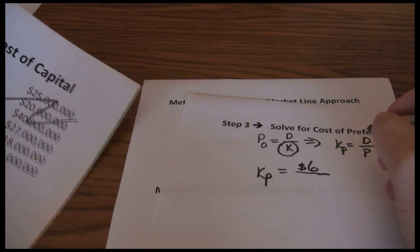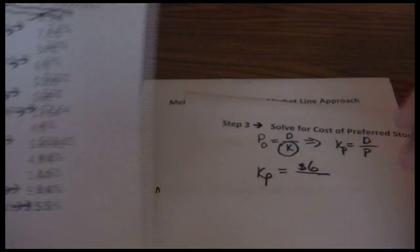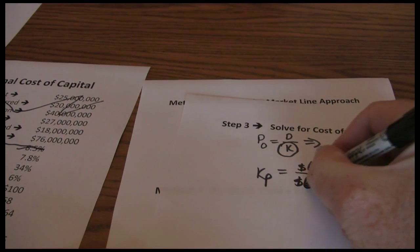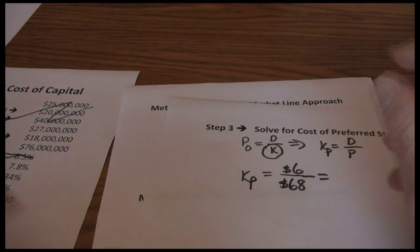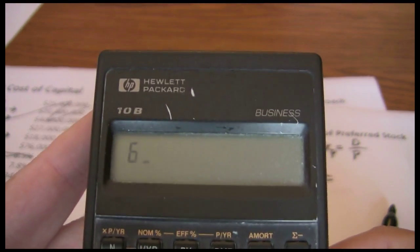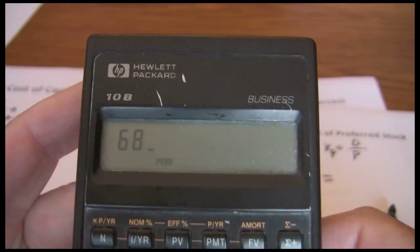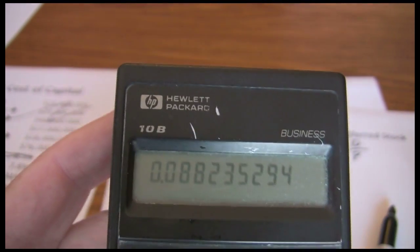And the current price of the preferred stock is $68. So we just take the 6 divided by 68 and get 0.0882.